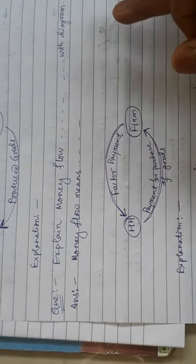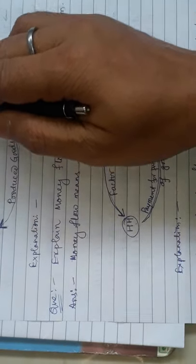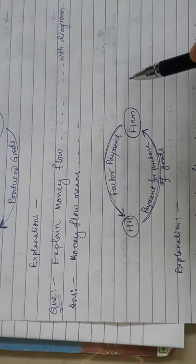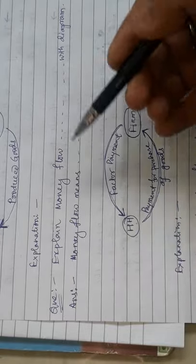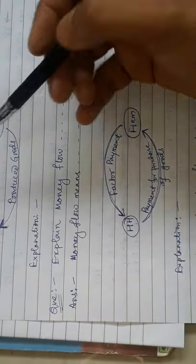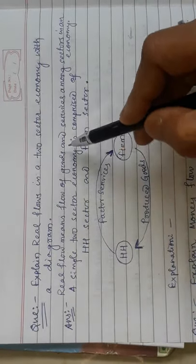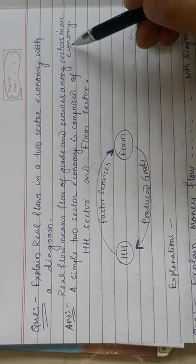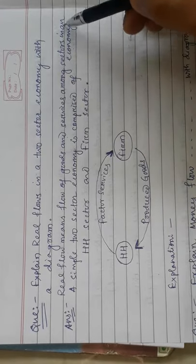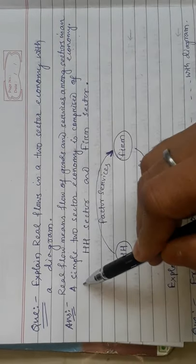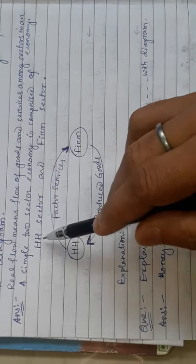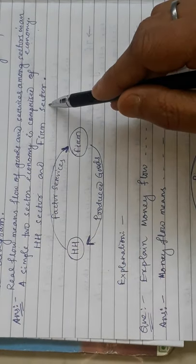Now let's look at questions from this chapter. The first question is: explain real flow in a two-sector economy with a diagram. Real flow means the flow of goods and services among sectors in an economy. A simple two-sector economy is comprised of the household sector and the firm sector.